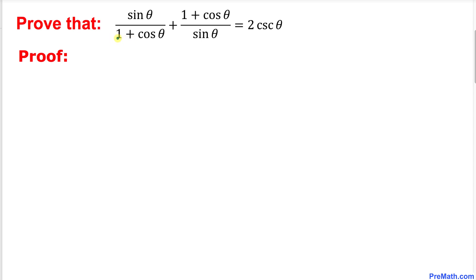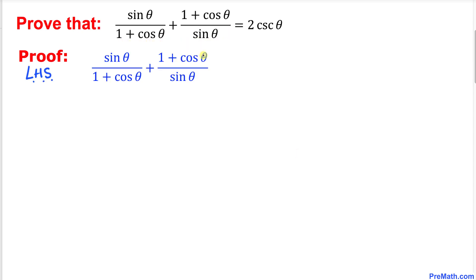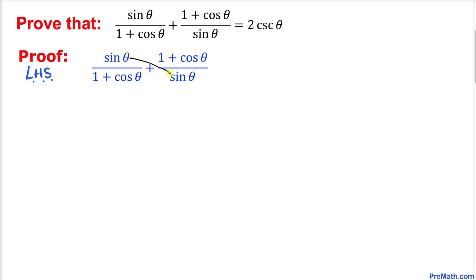The very first thing we are going to do is focus on the left-hand side of this equation. Now let's go ahead and cross multiply — using the crisscross method, we're going to cross multiply these two fractions.